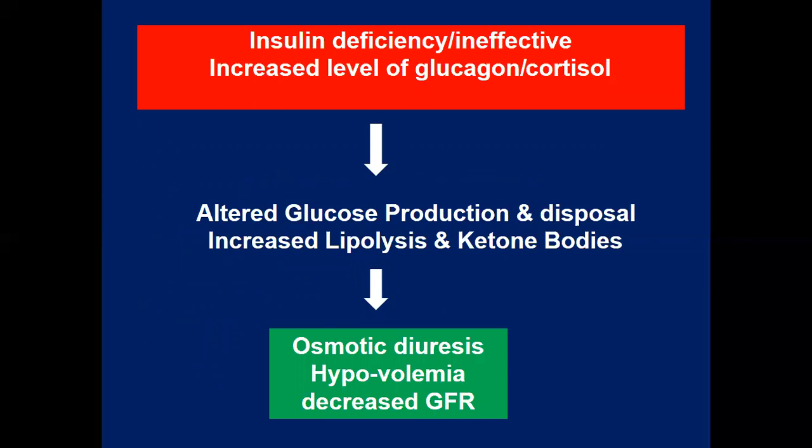Insulin deficiency or ineffectiveness leads to concomitant increased levels of counter-regulatory hormones such as glucagon, cortisol, growth hormone, and epinephrine. This hormonal imbalance enhances hepatic gluconeogenesis, glycogenolysis, and lipolysis, which ultimately leads to production of ketone bodies, causing osmotic diuresis, hypovolemia, and decreased GFR, which further aggravates the condition and leads to an acute emergency state.